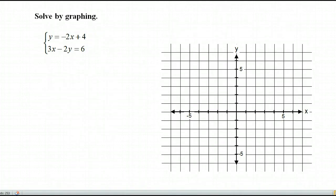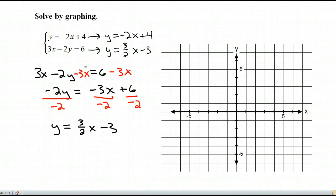Here is a system of equations, and it says solve by graphing. To solve by graphing, I'm going to have to first put each of these equations in slope intercept form. The first one is already in slope intercept form, but let's take the second one and put that in slope intercept form. You can see that I took this second equation, I subtracted 3x, and then I divided by negative 2, and I got my second equation.